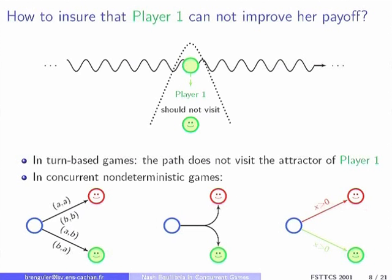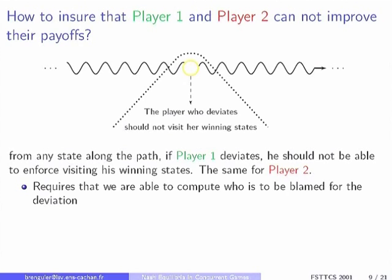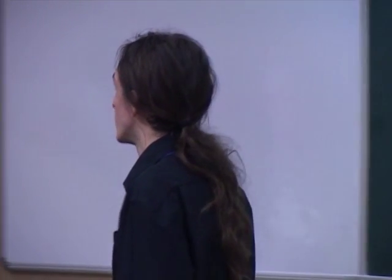It's the same in timed games. If players change their delay a little — so the one that was longest makes it shorter than the first one, or the other way around — you cannot know which one is deviating. So if two players could have deviated from the path, you have to ensure that both don't visit their winning state. It requires that you are able to know who is deviating, or to identify all the players that might be able to deviate.